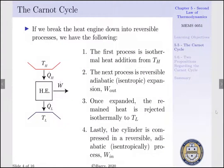The Carnot cycle is constructed by breaking the heat engine down into reversible processes. The first process is an isothermal heat addition process from our high-temperature reservoir TH, where the piston within the cylinder expands under a constant temperature heat addition process. The next process is reversible adiabatic expansion, which is synonymous with an isentropic process — meaning the change in entropy is equal to zero.